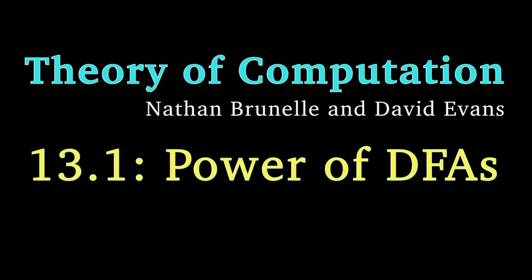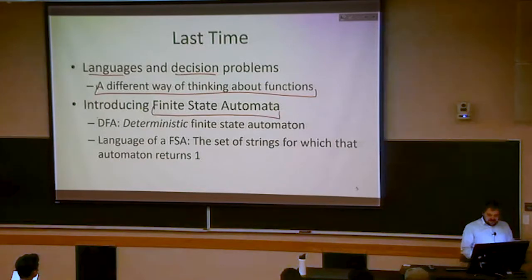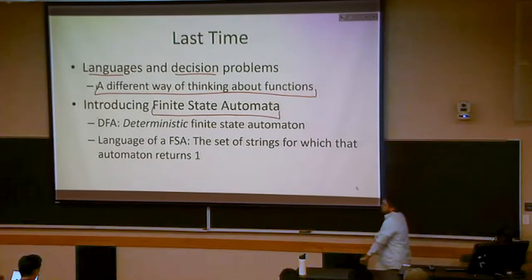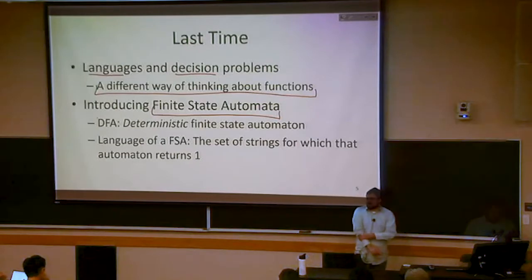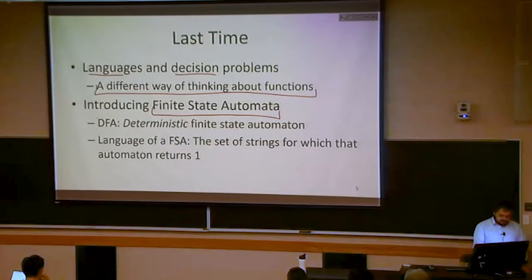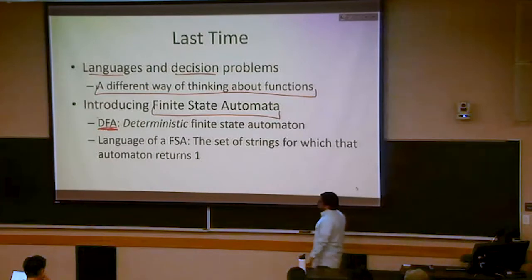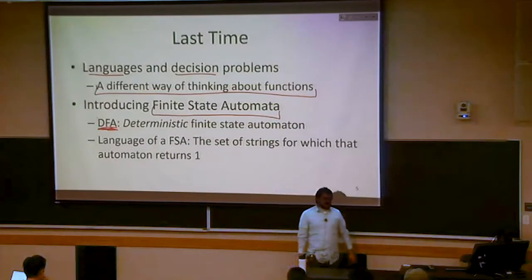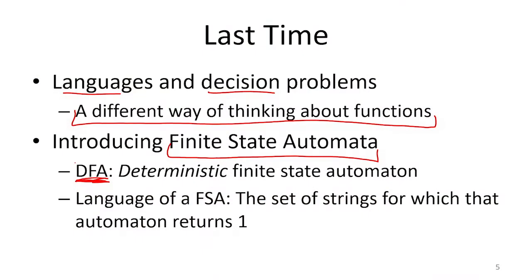Last time we talked about languages and decision problems. The idea is that they're a different way of thinking about functions. We also introduced finite state automata as a new model of computing suitable for implementing infinite languages. There are actually several different kinds of finite state automata. The kind we talked about last class is called a deterministic finite state automaton, or DFA for short.